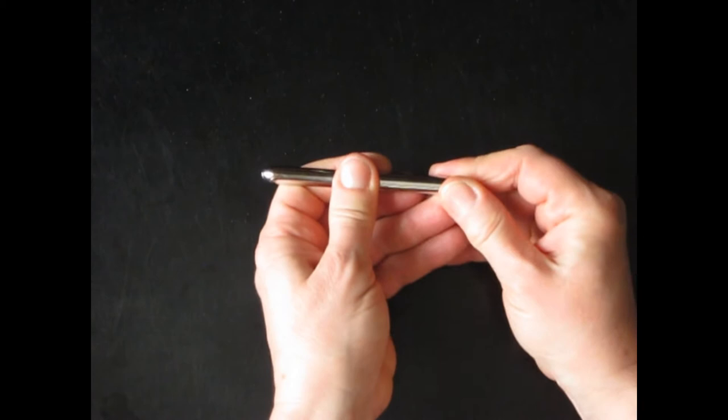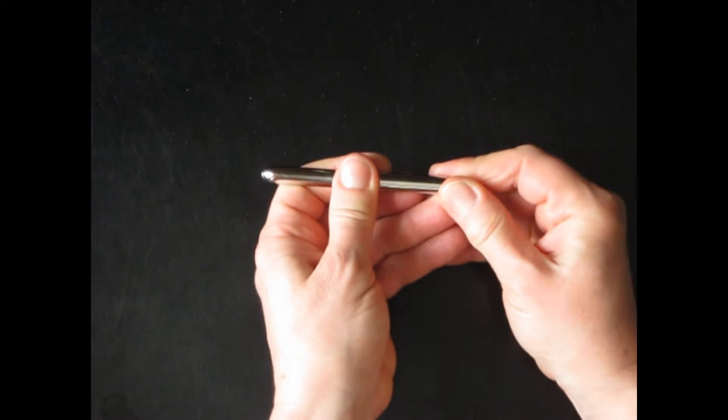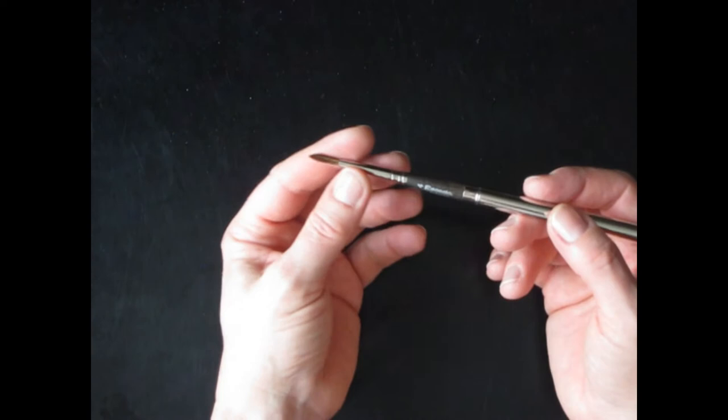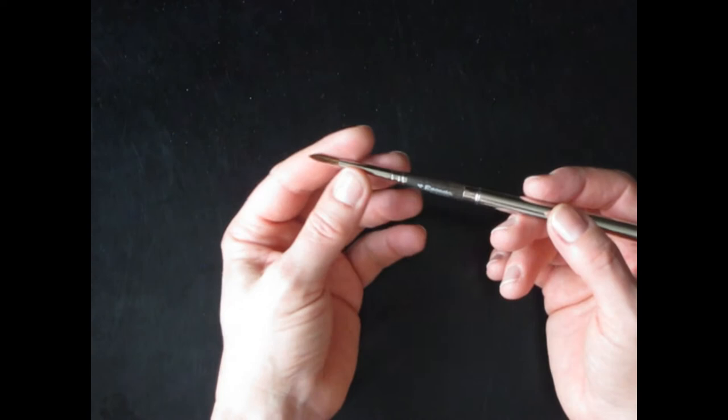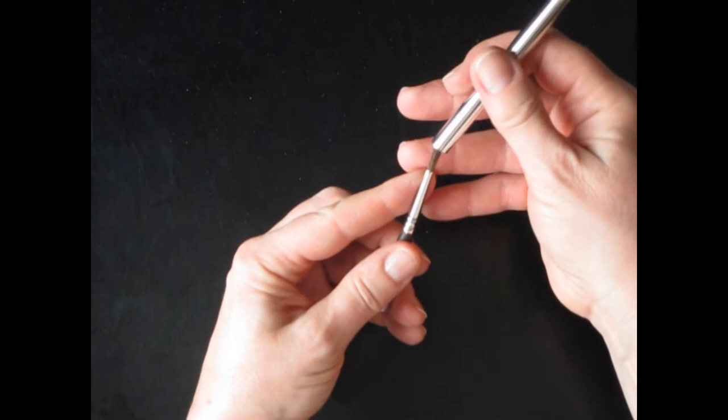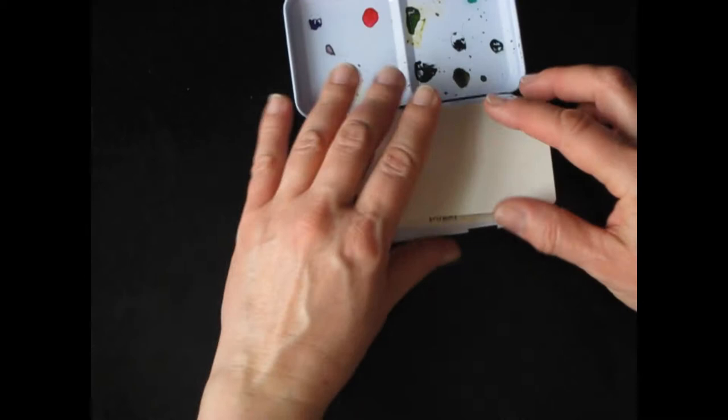I'm going to put my Escoda Travel Brush in the Odyssey palette. It's a nice light brush. It's got a fine enough point if you want to do details. But it's not so small that you can't do a wash with it as long as your paper is going to be a small enough size. So I can put this right in here. I like that it fits right in this Odyssey palette. It's ready to go. One contained unit. I don't have to remember to bring my brush. It's all set to go.